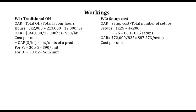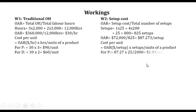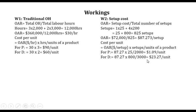Cost per unit equals overhead absorption rate in dollars per setup, times number of setups, divided by units of the product. For product P: $8.727 times 25 setups divided by 2,000 units. For product D: $8.727 times 800 setups divided by 3,000 units. This gives the setup cost per unit for each product.